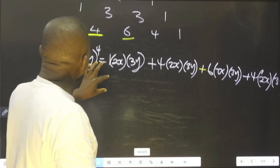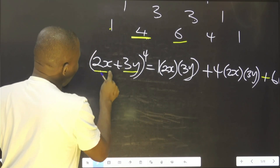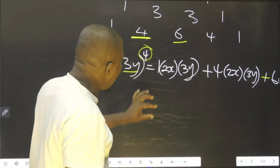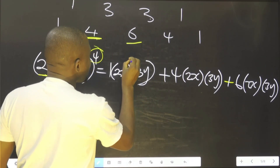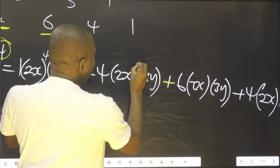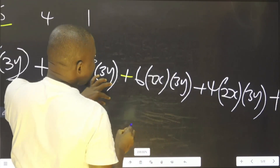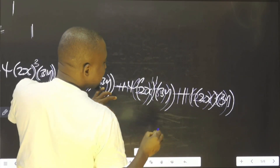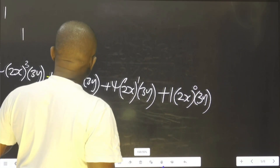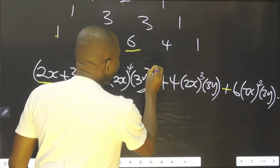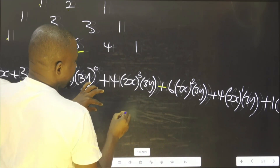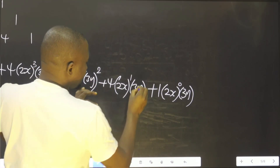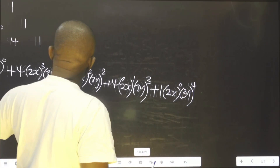What we need to do now is to start from this first term with power 4, then reduce it. We get to the end. So for 2x, it is going to be: 4, 3, 2, 1, 0. Then for 3y, we start from 0, 1, 2, 3, then 4.